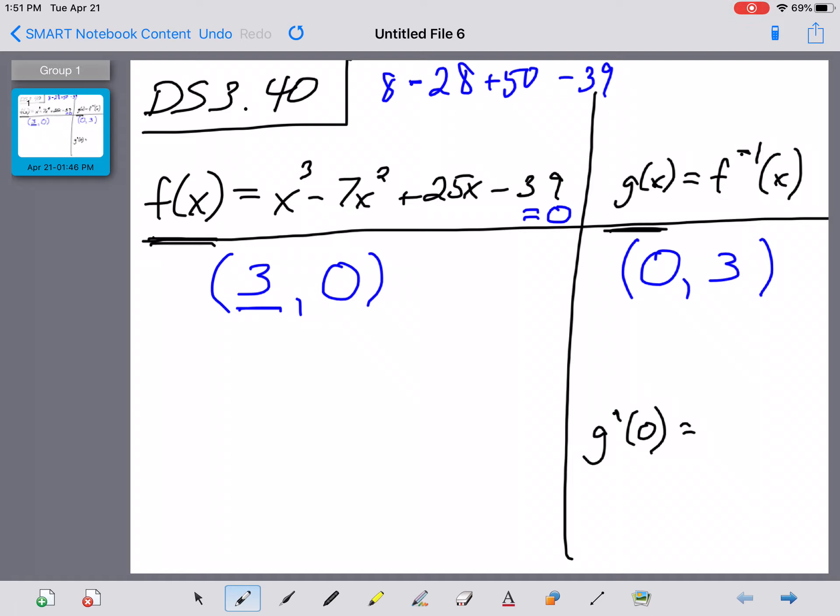So we have the explicit definition of f of x. Right beneath that, we're going to differentiate that to find f prime. That's going to give us a 3x squared minus a 14x and a plus 25.